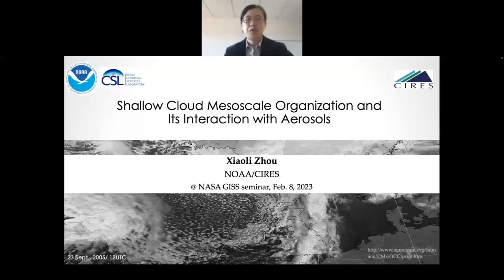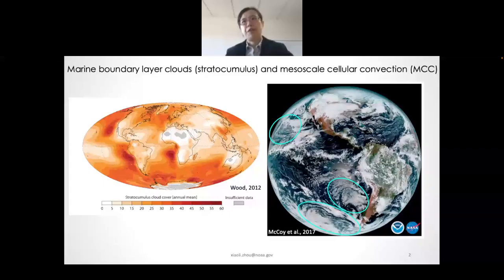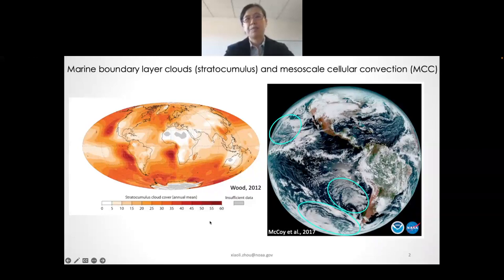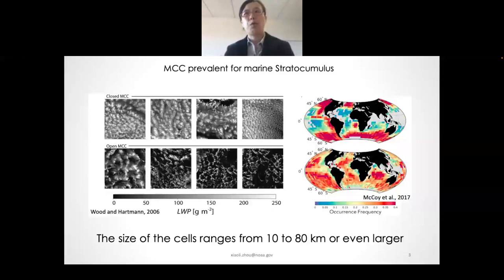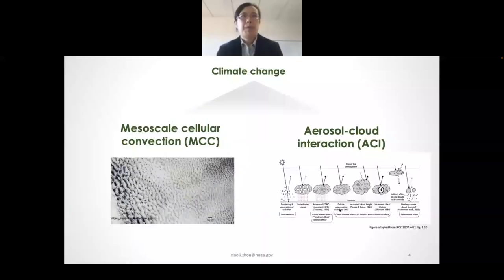The importance of marine boundary layer cloud can't be stressed enough. They strongly reflect solar radiation back to space, and they're ubiquitous, especially over the subtropics and mid-latitudes. Although stratocumulus clouds have high cloud coverage, they are not spatially homogeneous — they are frequently observed in an organized texture on the mesoscale in the form of mesoscale cellular convection. Two typical mesoscale cellular types are the closed cells and open cells.